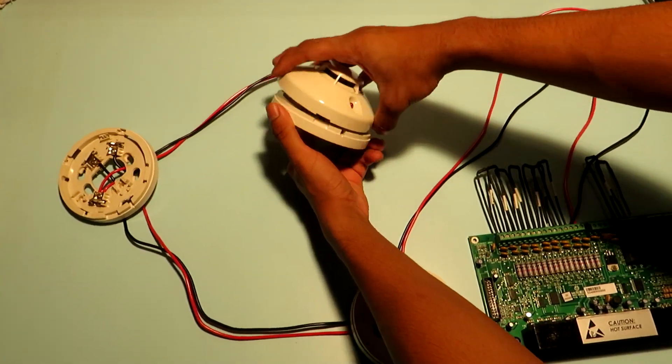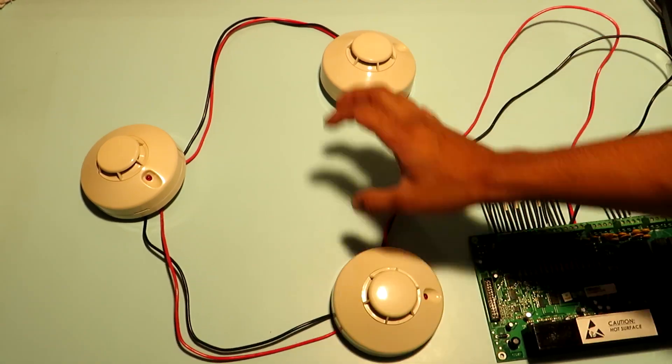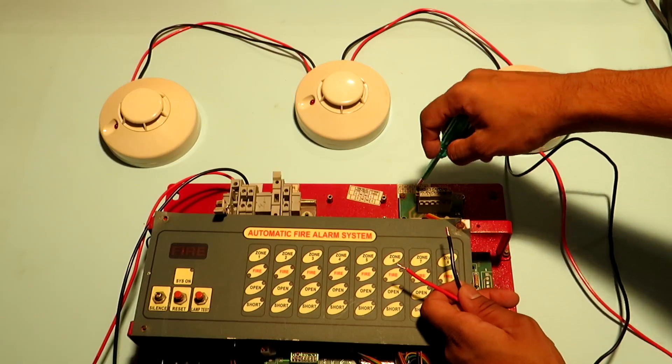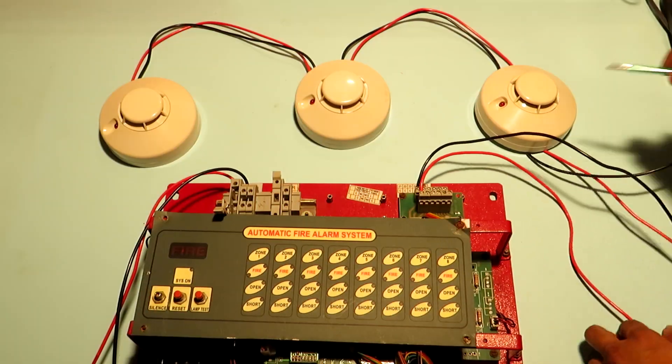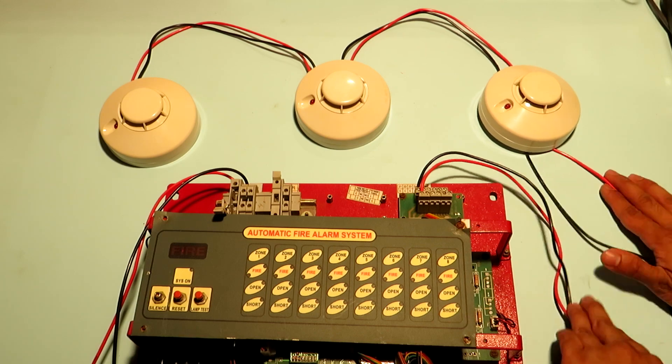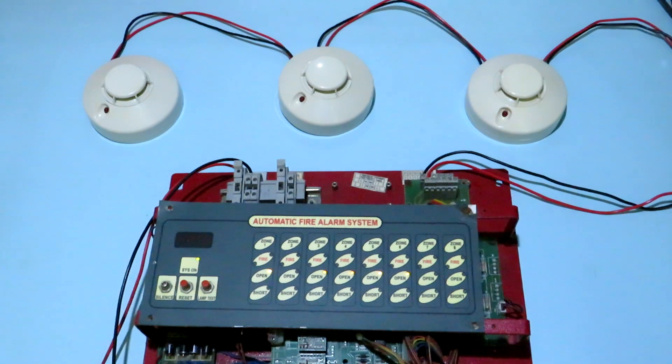So now I'll fasten back the smoke detectors with their base units. So here is an analog fire alarm control panel from 2006 and I'll be powering it up so that you can get a clear understanding of the working of the entire system.